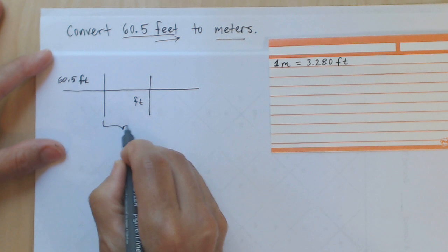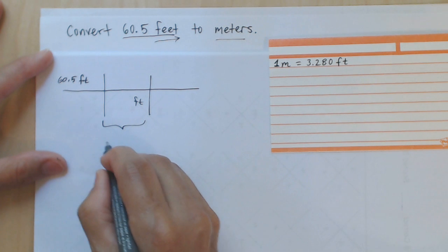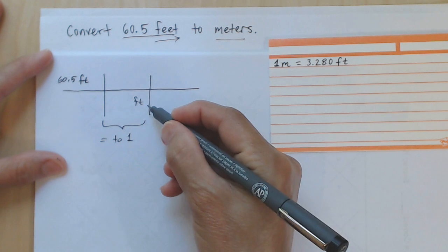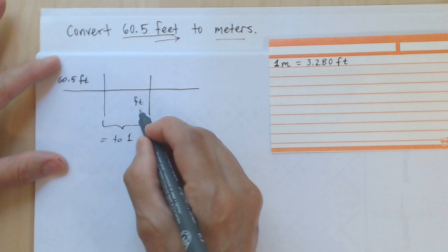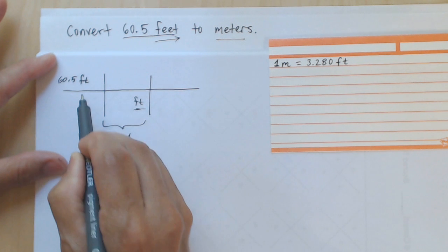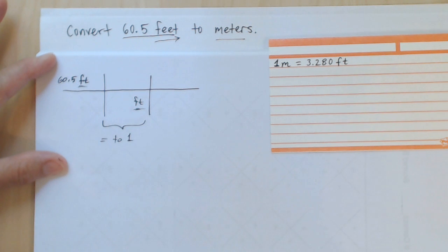In this portion of the fence, what I'm looking for is a fraction that's both equal to one and that also has units that will cancel in the numerator with the units in the denominator.